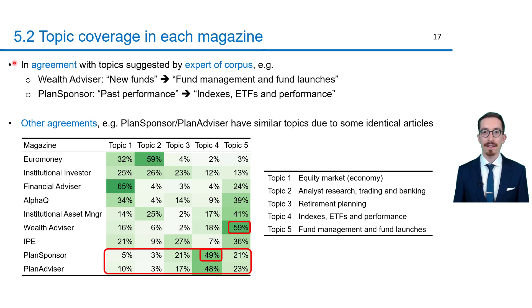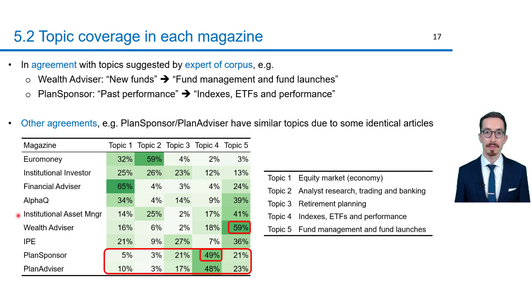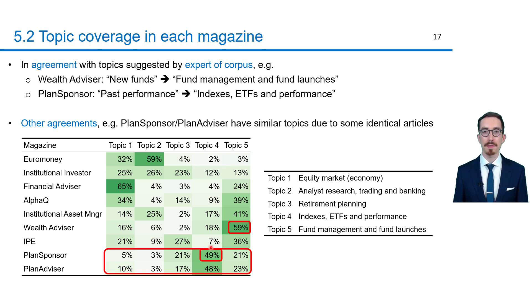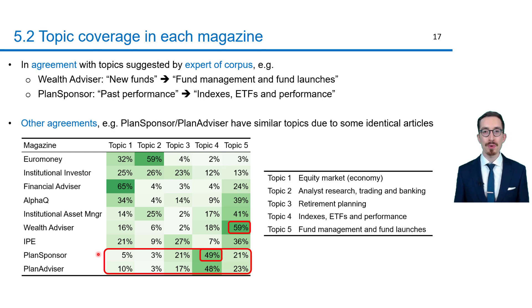Besides identifying topics, I analyzed the topic coverage in each magazine. The table here on the left shows the relative importance of each topic in each magazine — that is, their topic proportions. These proportions are in agreement with the topics suggested by the expert of the corpus. For instance, he suggested that the Wells Advisor frequently writes about new funds. This is actually true as indicated by the 59% of topic 5, which is about fund management and fund launches. Similarly, Plan Sponsor writes about past performance via the topic indexes, ETFs, and performance. Plan Sponsor and Plan Advisor also have similar topic proportions due to numerous identical articles.